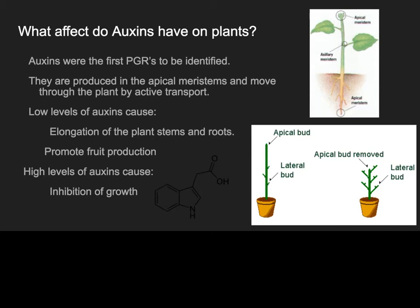Low levels of auxins can cause elongation of stems and roots, which means it'll help the plant grow. It might also help fruit be produced in fruit-bearing plants. But notice — if you cut that apical bud off, the plant won't elongate because these are naturally occurring regulators. This is very similar to serotonin, a hormone in your brain: at low levels you feel happy, but at high levels you can feel depressed.